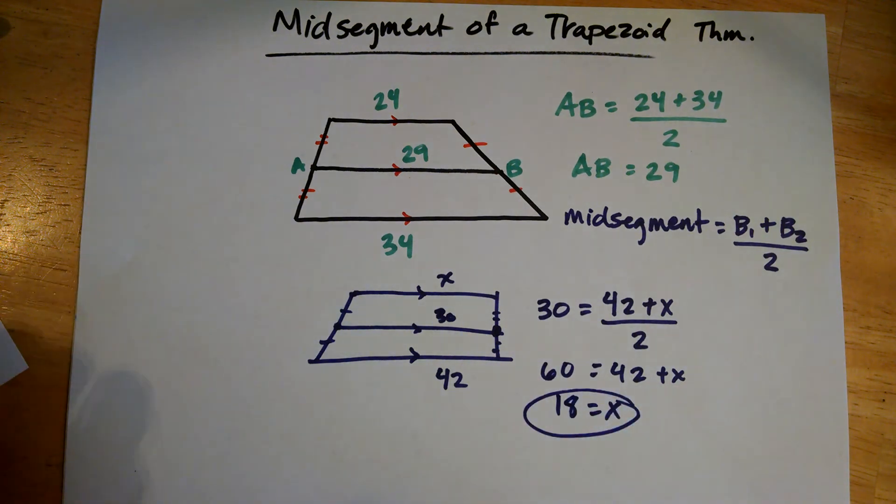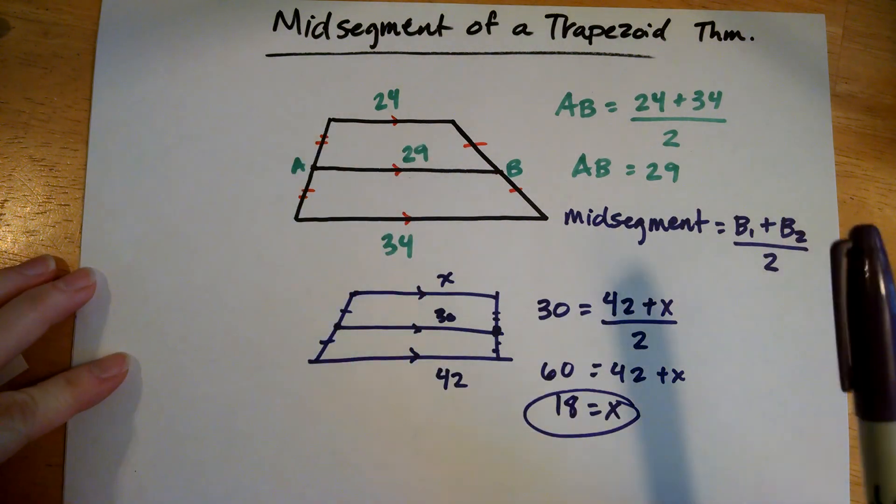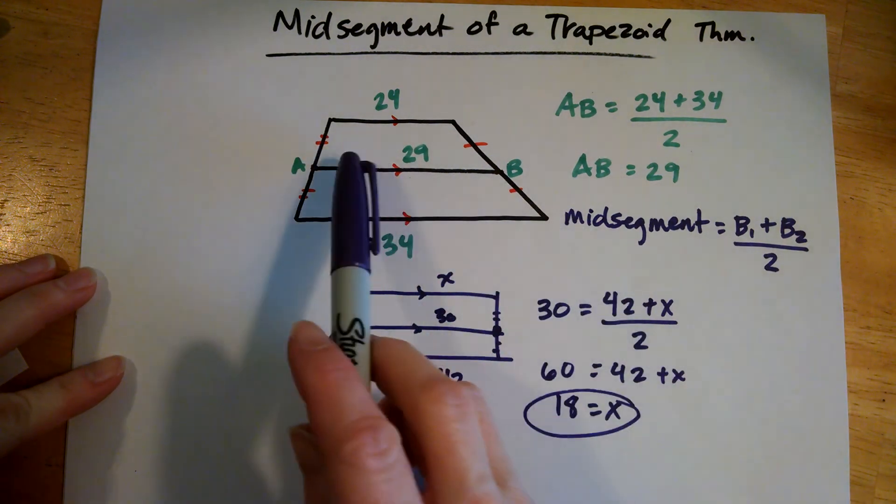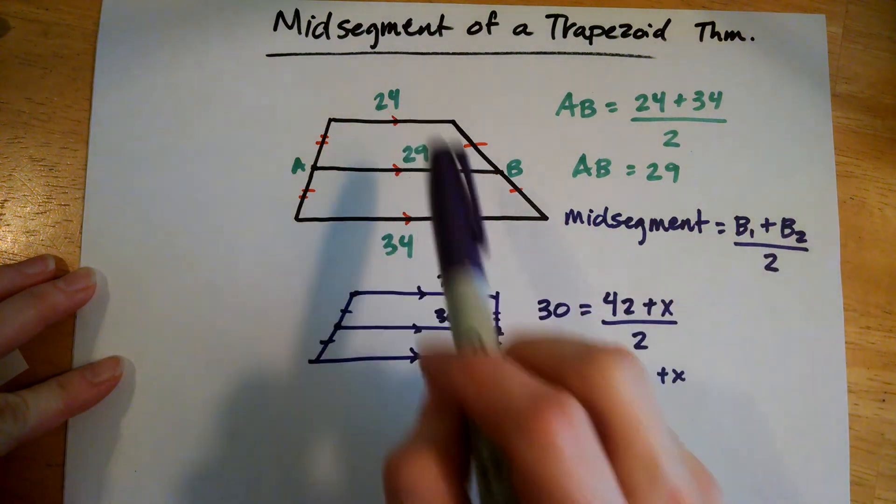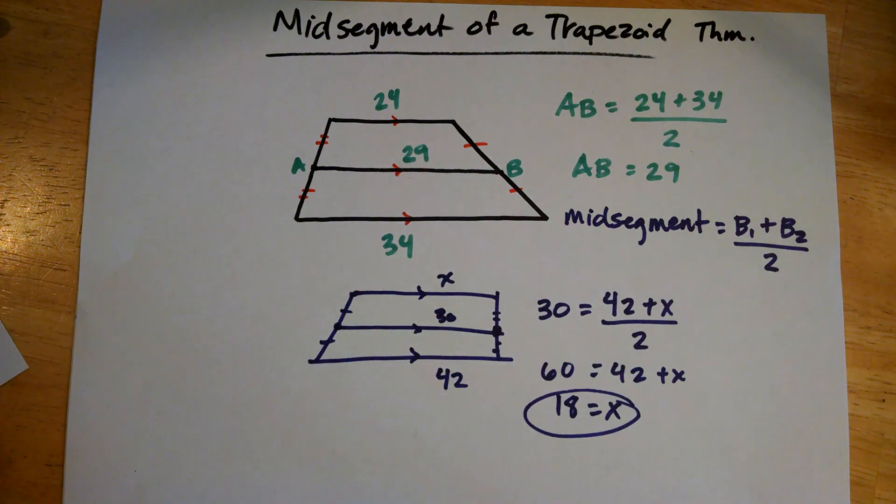Ta-da! So whatever they give you, as long as they give you two of the lengths, you can always figure out the third one. So mid-segment, average of base 1 and base 2. And that's it. Enjoy!